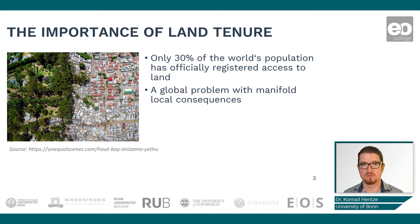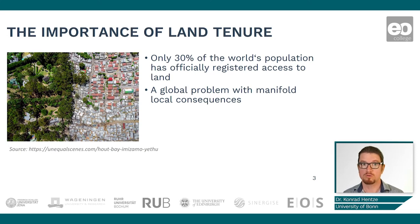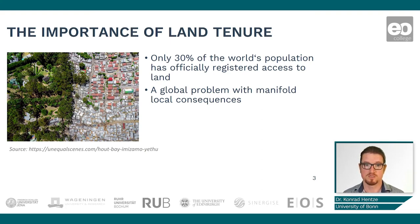It's a global problem with manifold local consequences, and it has been recognized by the World Bank, which has published a series of reports and blog posts you might want to read. They recognize that insecure access to land is one of the big hindering problems in terms of economic development and social security.